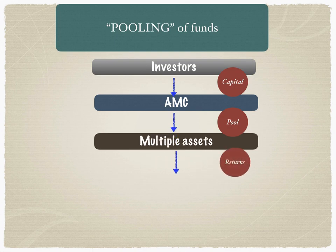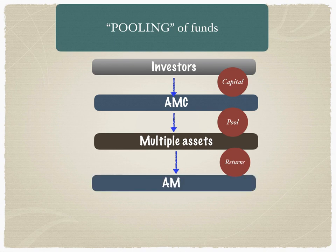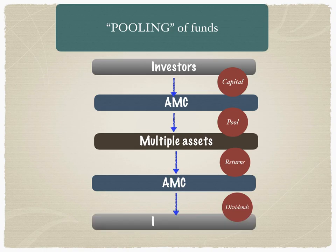The multiple assets generate returns which are given back to the asset management company. The asset management company consolidates these returns and gives them by way of dividends to the investors. This is the most common concept of pooling of funds. This circular flow of capital and returns happens all the time unless the investor actually takes out the returns.